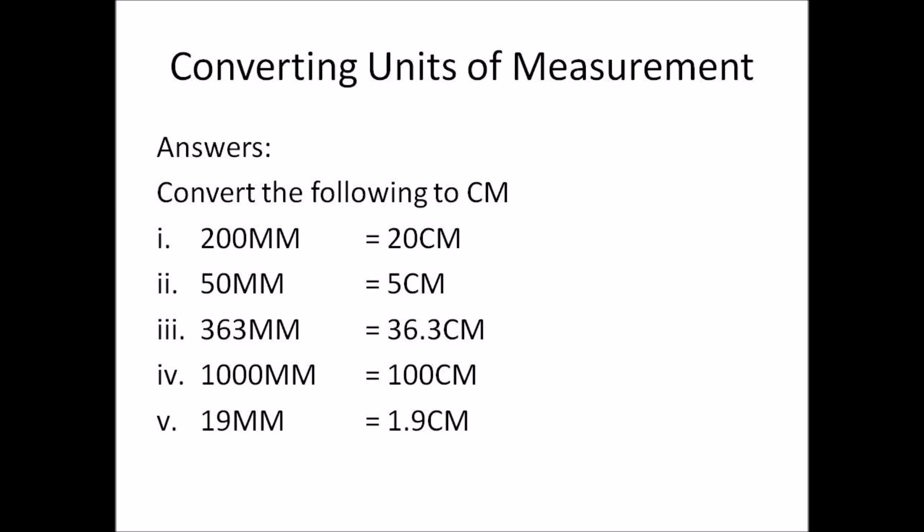Here are the answers to the questions. The first one is 20 centimeters, the second is 5 centimeters, the third is 36.3 centimeters, the fourth is 100 centimeters, and the last is 1.9 centimeters. All that has happened is the given measurements in millimeters have been divided by 10 to get to centimeters.